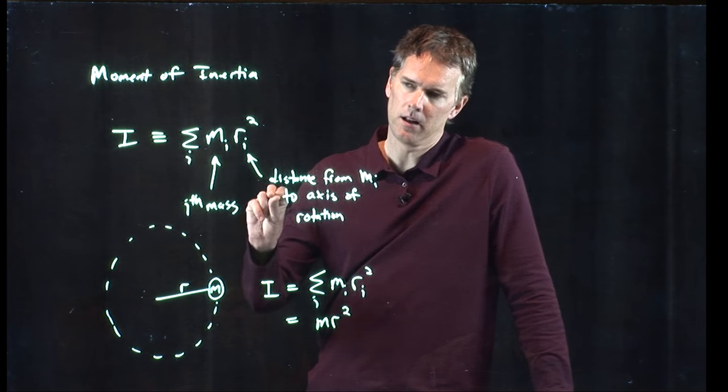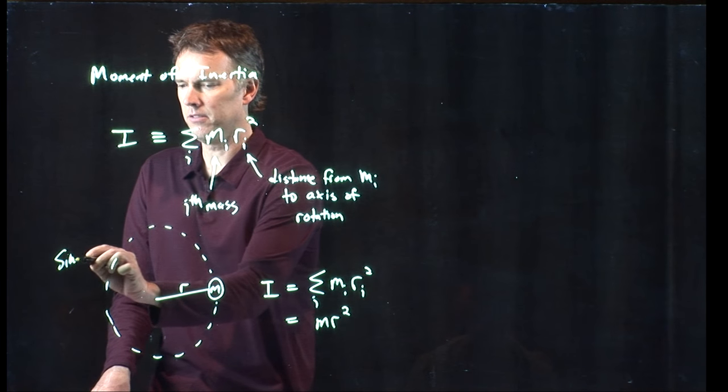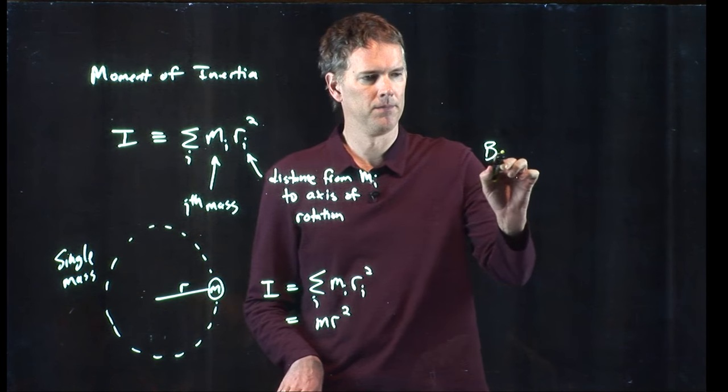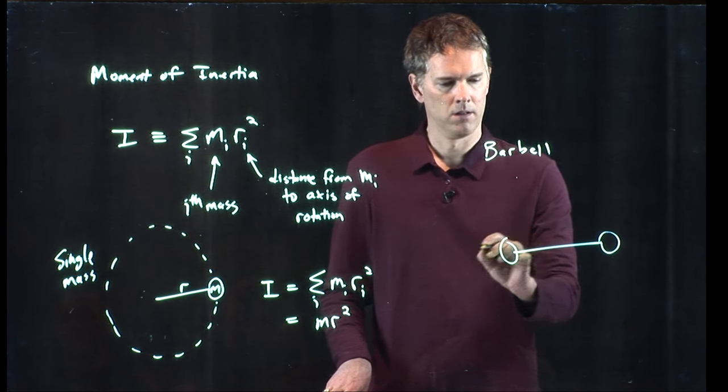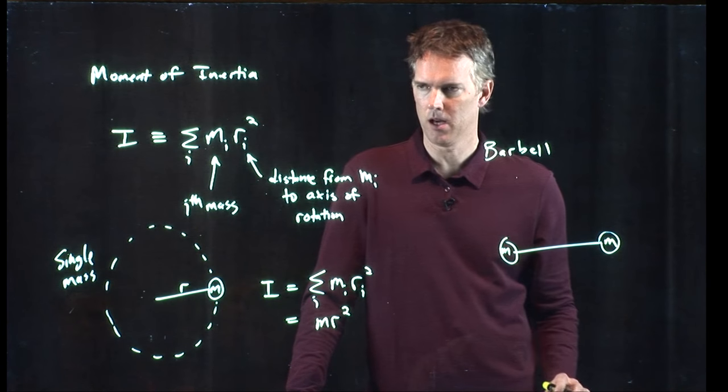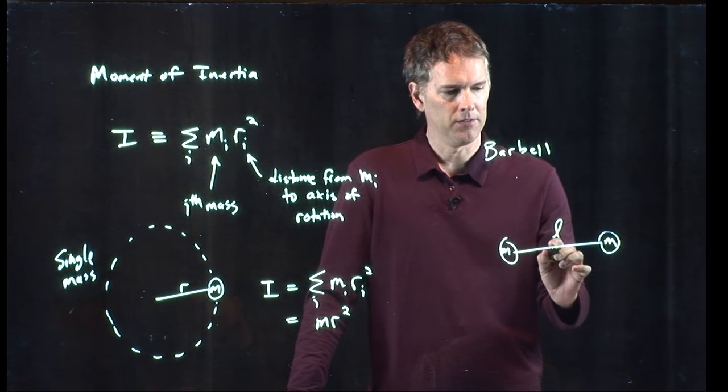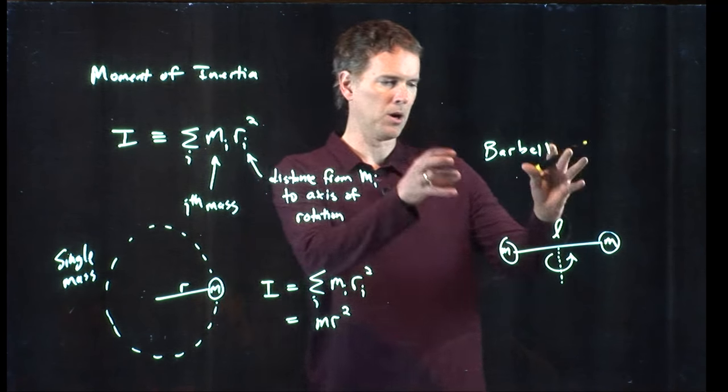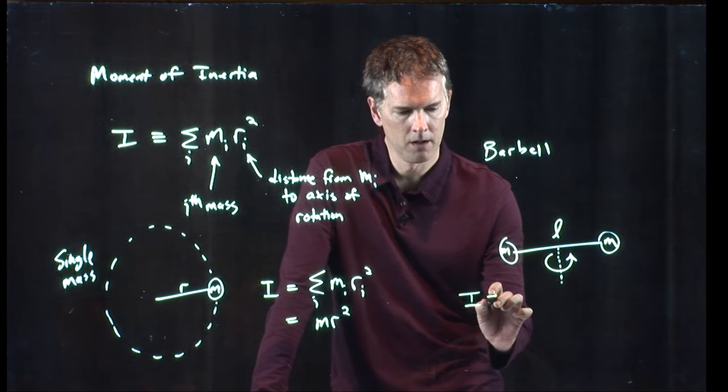But let's say we add a little bit more stuff to it. Let's say instead of a single mass, let's do a double mass, like in a barbell. So a barbell looks like this. We've got mass m at one end, mass m at the other end, the whole length of the barbell is L, and this is our axis of rotation. We'll spin it about the center. So you hang a barbell from a string and you spin it around like that. What is the moment of inertia?